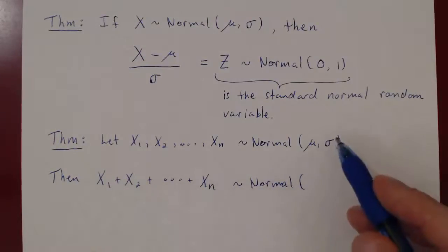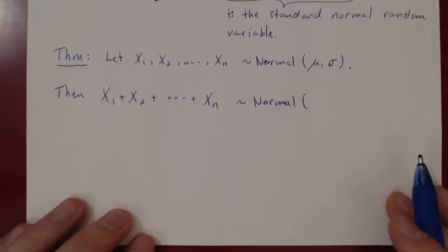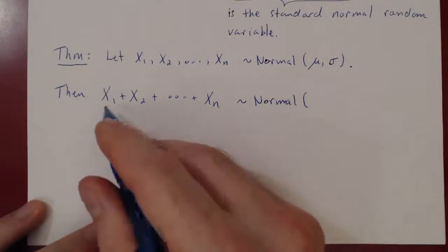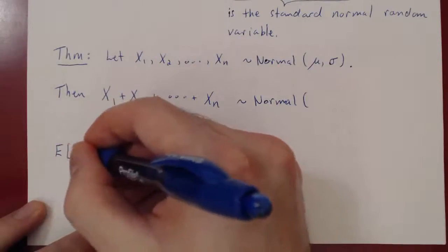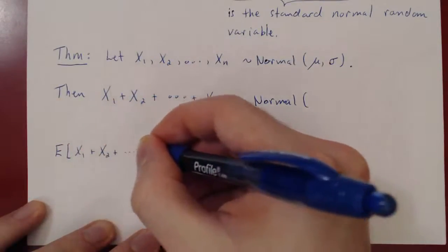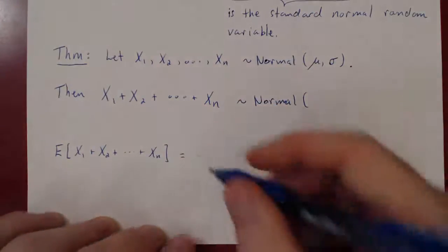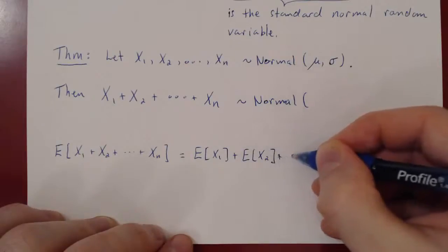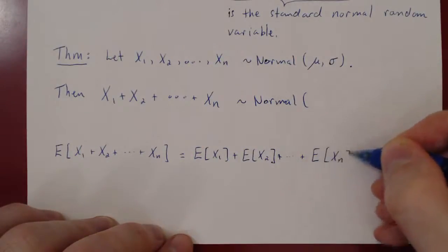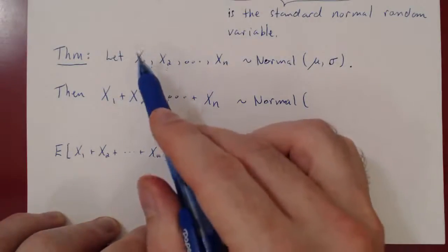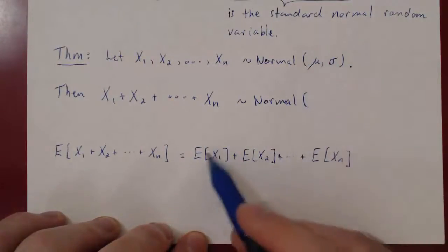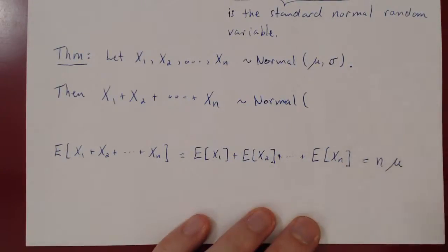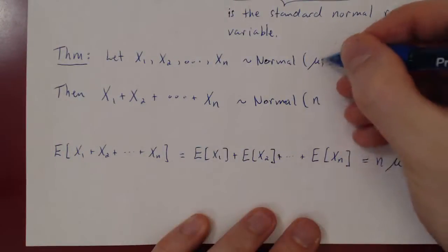What is the mean of this sum and what is its standard deviation? The mean is the expected value of the sum. Assuming independence, that is the sum of the individual expected values. By assumption, each random variable from x1 to xn has a mean of mu, so this is mu added n times, giving us n times mu. So the mean of the sum is n times the individual mean.